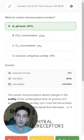So going back to our question, the central chemoreceptors are going to monitor the pH level in our cerebrospinal fluid.